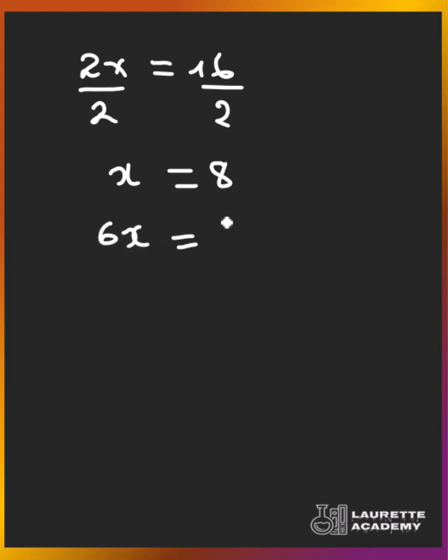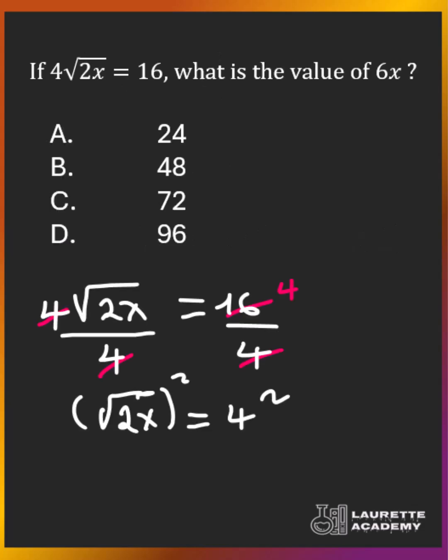And so 6x is equal to 6 times 8, which is equal to 48. And therefore our answer is B.